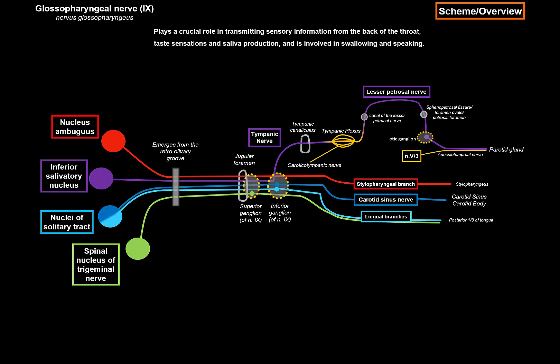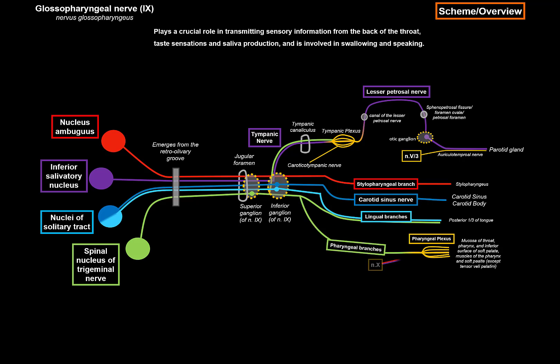So from the posterior one-third of the tongue we have two fiber types: one for taste and one for general sensory like touch, pain, and temperature. There's also a branch along the tympanic nerve from the mucous membranes of the middle ear, tympanic membrane, and part of the external ear. A large pharyngeal region is supplied through the pharyngeal plexus, formed by the vagus nerve, laryngopharyngeal nerves from the cervical sympathetic plexus, and the glossopharyngeal nerve; those fibers travel to the superior ganglion, then to the spinal nucleus of the trigeminal nerve. Fibers also come from the mucous membranes of the palatine tonsils.